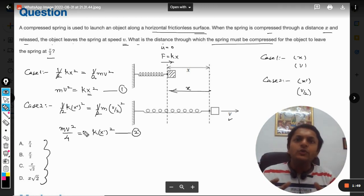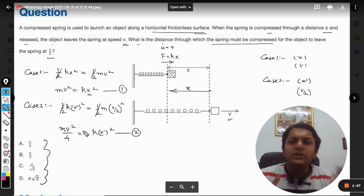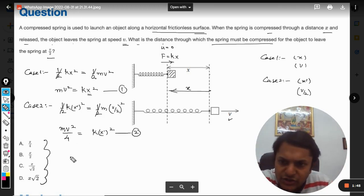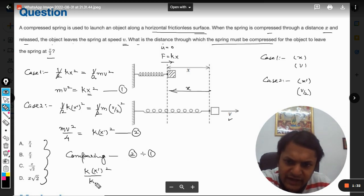Now what we do is divide these two equations by each other. On comparing the two equations, dividing equation 2 by 1, it will be k(x')²/kx² = (mv²/4)/(mv²).